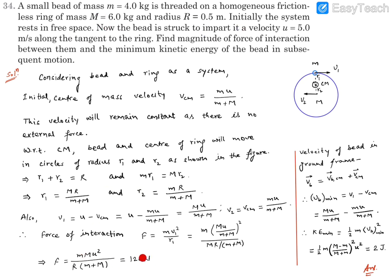Substituting the known numerical values, the force of interaction comes out to be 120 N. Next, to find the minimum kinetic energy of the bead, we work in the ground frame since kinetic energy is a ground-frame quantity. The velocity of the bead in the ground frame is the vector sum of its velocity in the CM frame plus the velocity of the center of mass. This vb is minimum when the two vectors are in opposite directions.